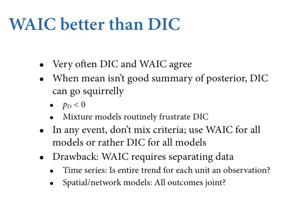The major drawback to WAIC is that it requires separability of your data. In a time series, you can't treat observations as independent because each one causes the ones after it. In those cases, WAIC is awkward to use and you probably fall back on DIC or cross-validation designed for time series. We'll have an example of a network model later where they're all co-determining. There is no oracle in this business. What encourages me is that when I started graduate school, neither DIC nor WAIC existed — and things have gotten a lot better.